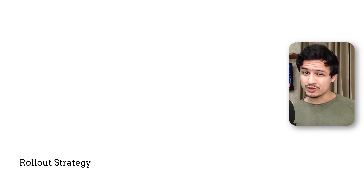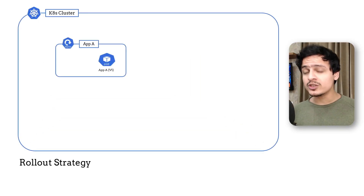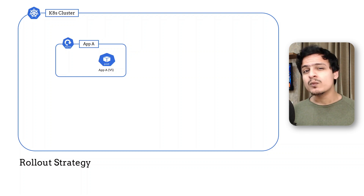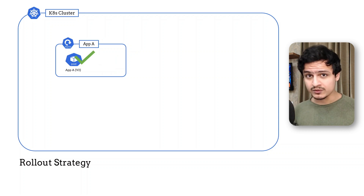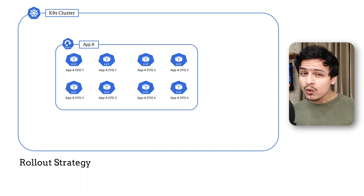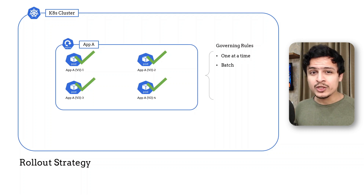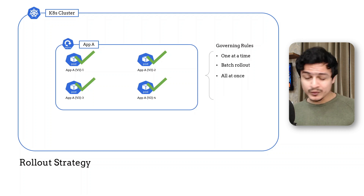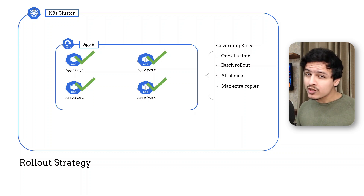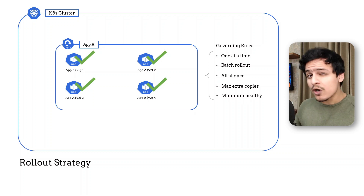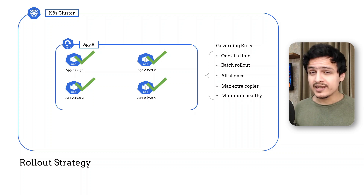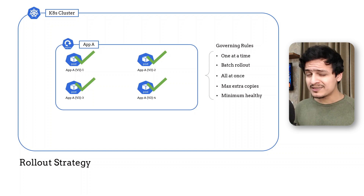Traditionally we have been using the rollout strategy for releasing new versions of our microservices. In such a strategy we start a new copy of the new version then shut down an older copy of the previous version, and keep doing this until all the old copies have been replaced. There are a number of rules governing this — like batching copies or doing it all at once — and you can set the max extra copies you want to allow or the minimum healthy copies to maintain. Clearly it's pretty flexible, which is why it's been around for so long.